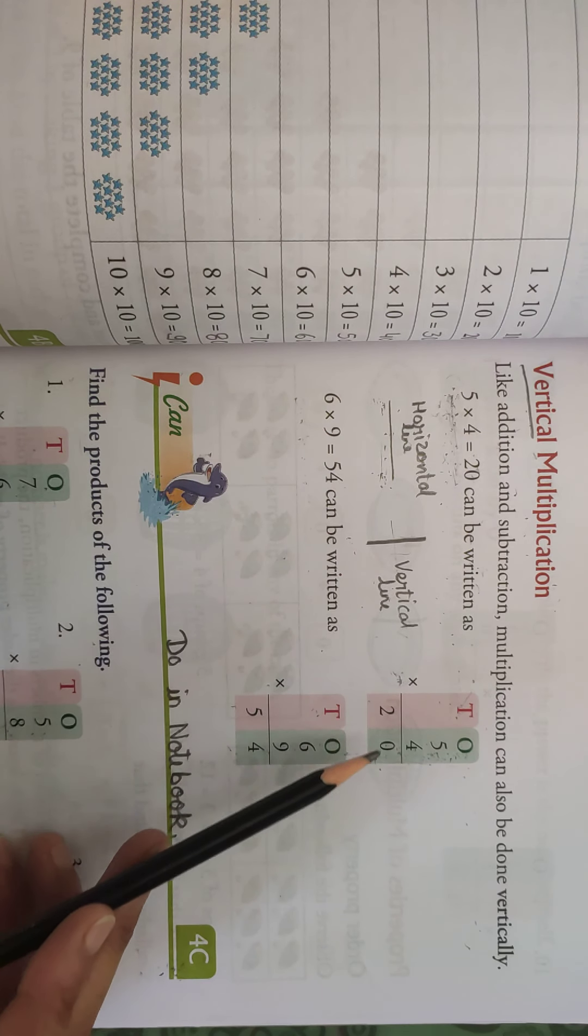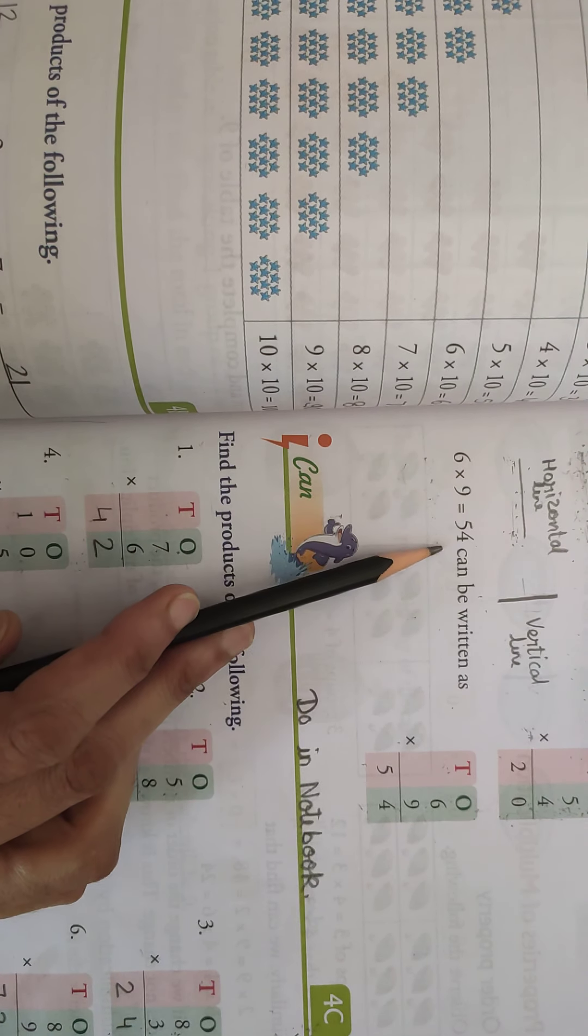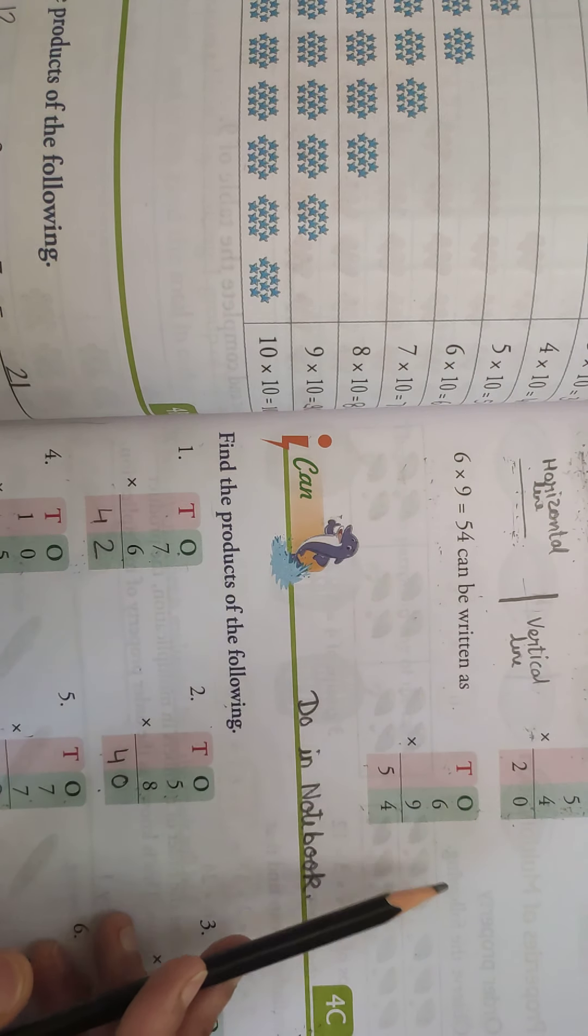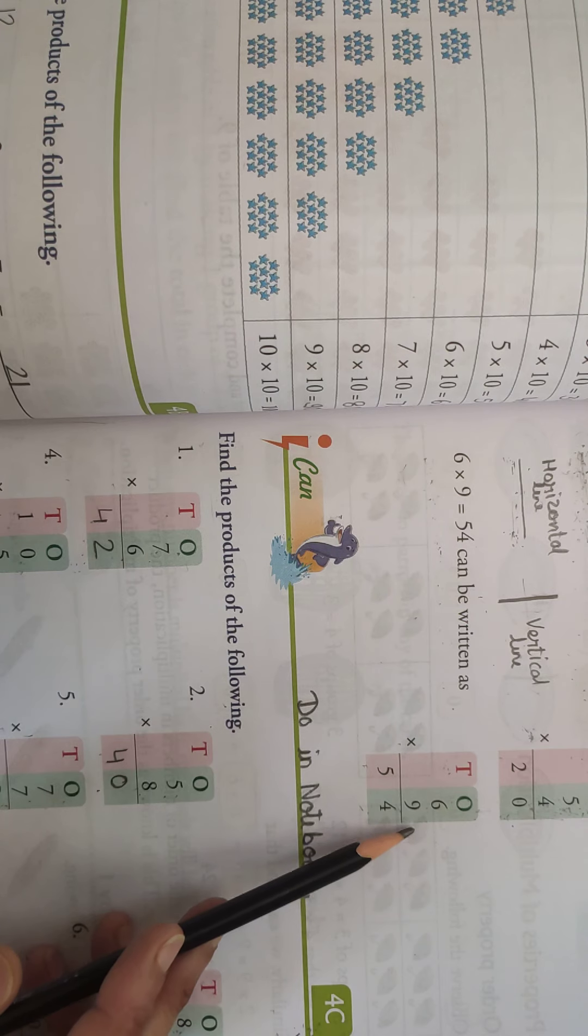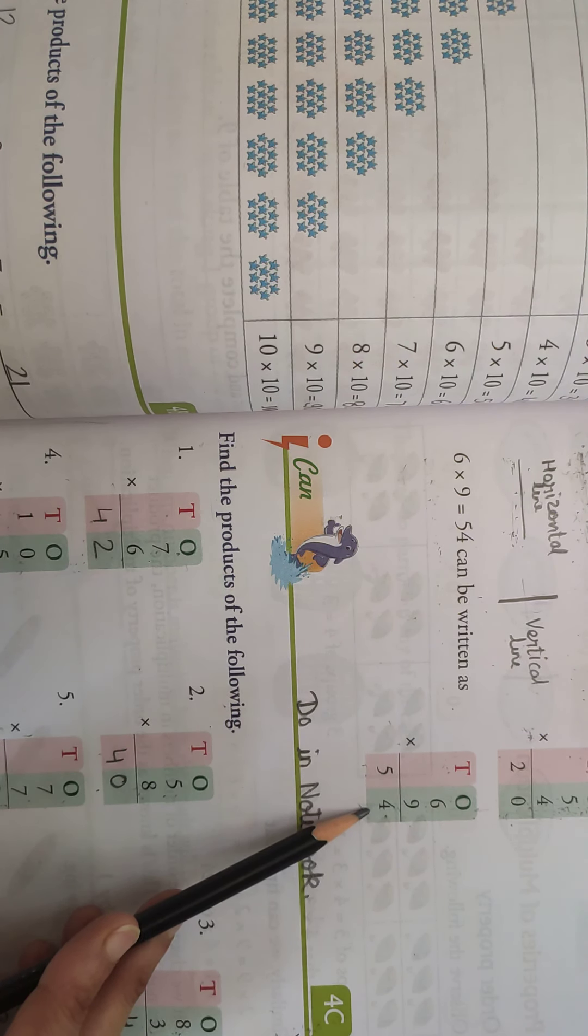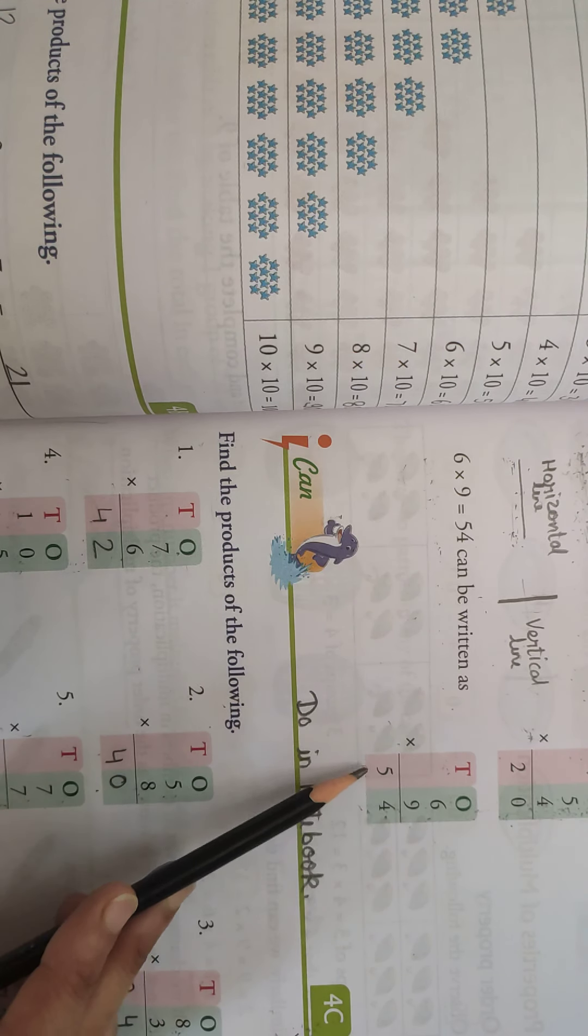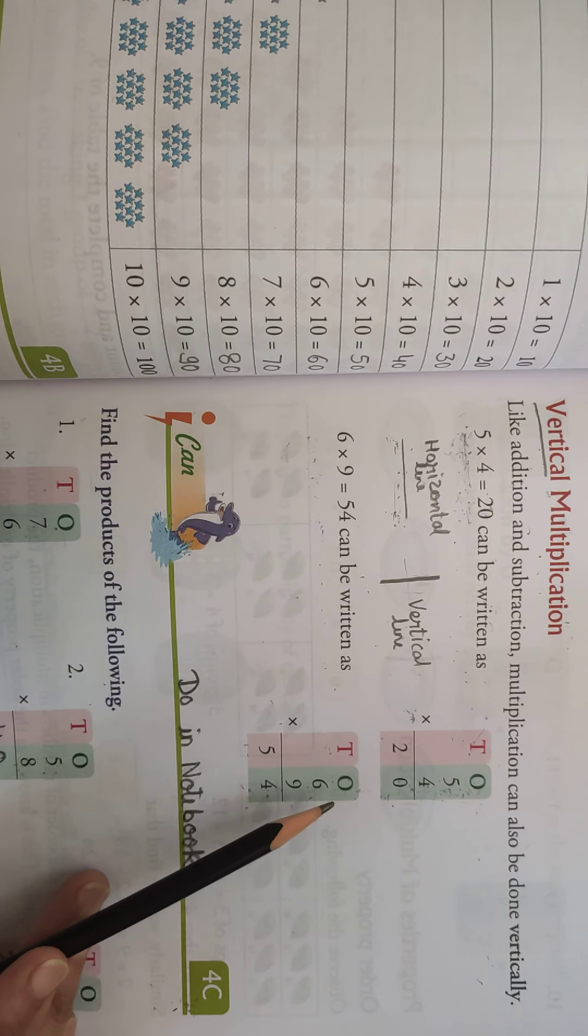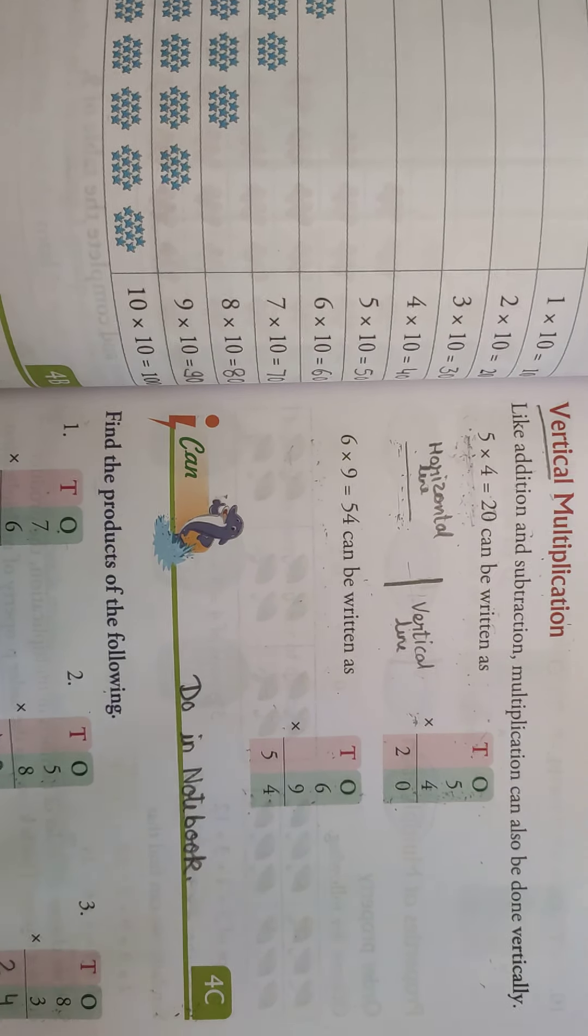Okay, so 4 fives are 20. Then 6 multiplied by 9 is equal to 54, can be written as, so it can be written as, 6 multiplied by 9, so it is 54. 9 sigza kya hota hai, 54 hota hai. Okay students, so I hope all of you understand this topic, vertical multiplication.